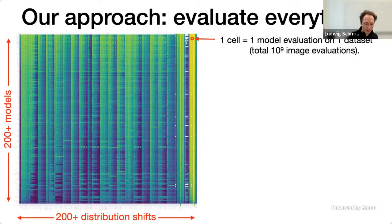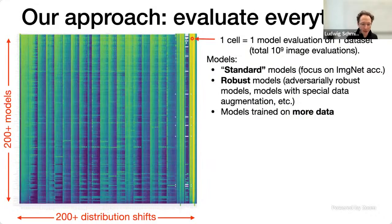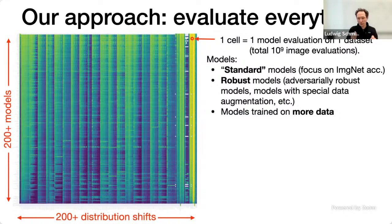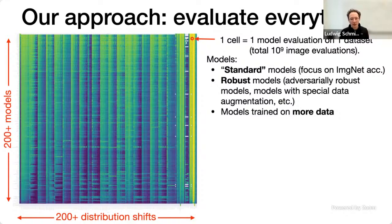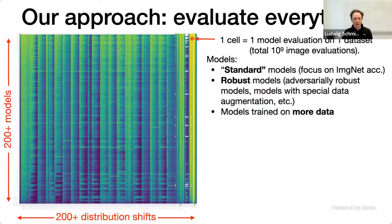Every cell in this matrix corresponds to evaluating one model in one test condition — totaling about a billion image evaluations. The models fall into three categories. First, standard models trained solely to make progress on ImageNet, like AlexNet, VGG, ResNet, and DenseNet. Second, robust models where authors introduced modifications specifically for robustness, like adversarial training, special data augmentation, or special filtering layers. Third, models trained on more data beyond just the ImageNet training set.